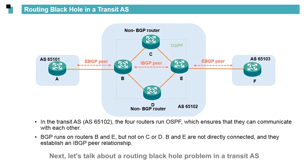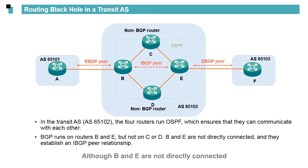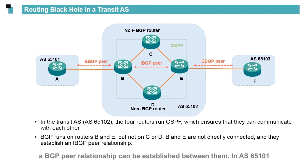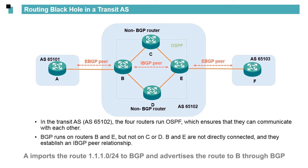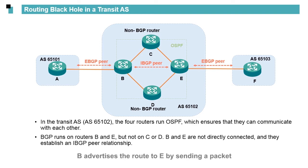Next, let's talk about a routing black hole problem in the transit AS. Six routers are deployed in three ASs. BGP runs on A, B, E, and F, but not on C or D. OSPF runs on B, C, D, and E, although B and E are not directly connected. A BGP peer relationship can be established between them. In AS65101, it imports the route 1.1.1.0/24 to BGP and advertises the route to B through BGP. OSPF runs in AS65102, so B and E are reachable to each other. B advertises the route to E by sending a packet, which traverses either C or D.